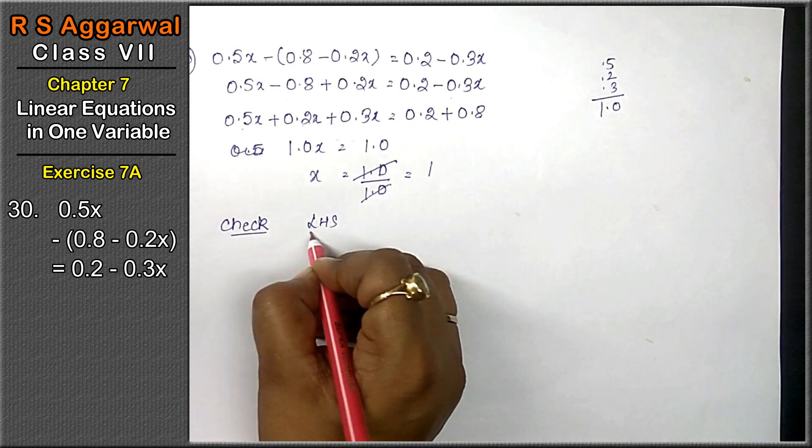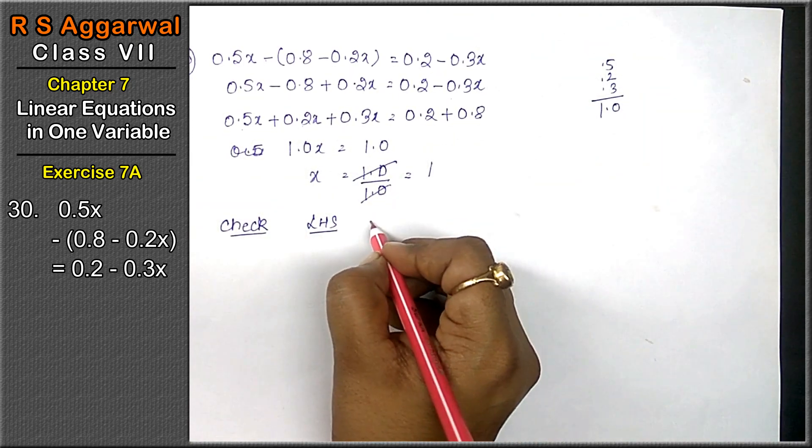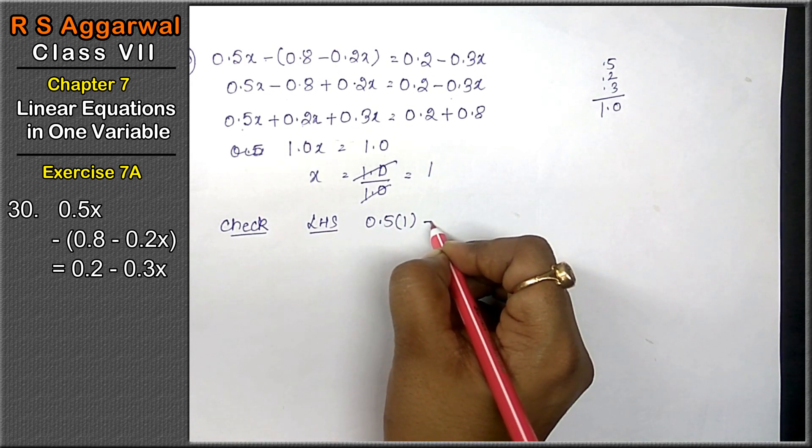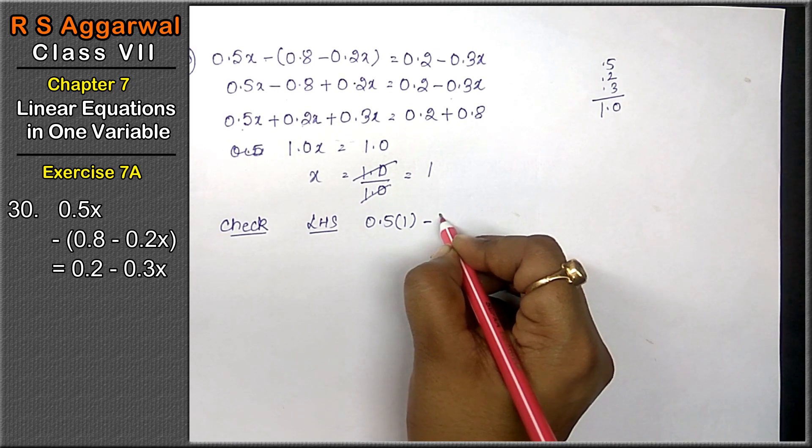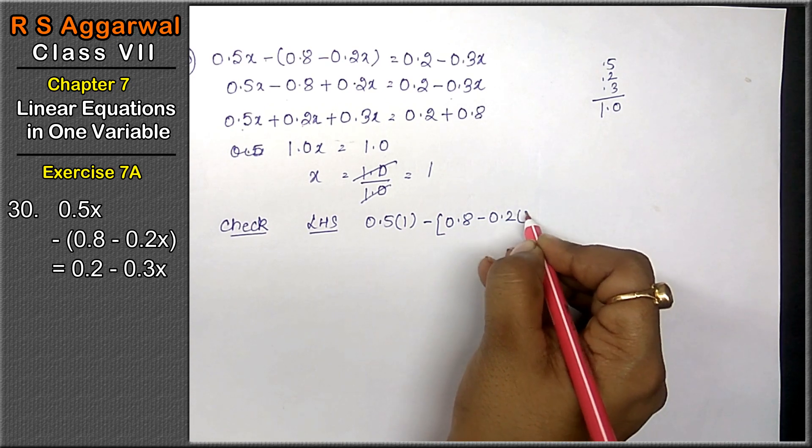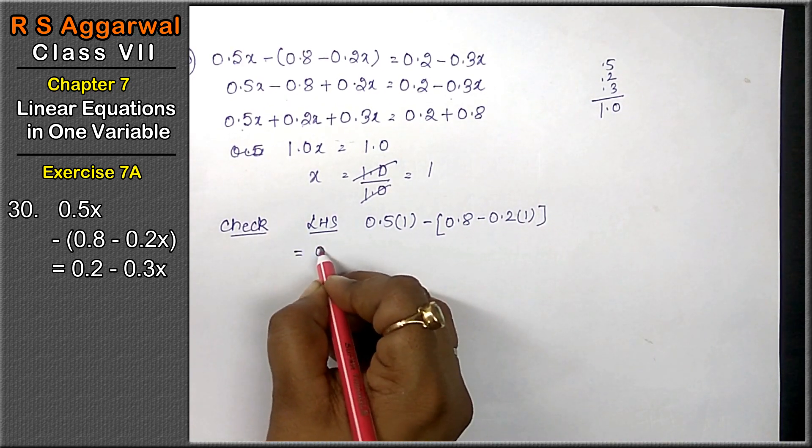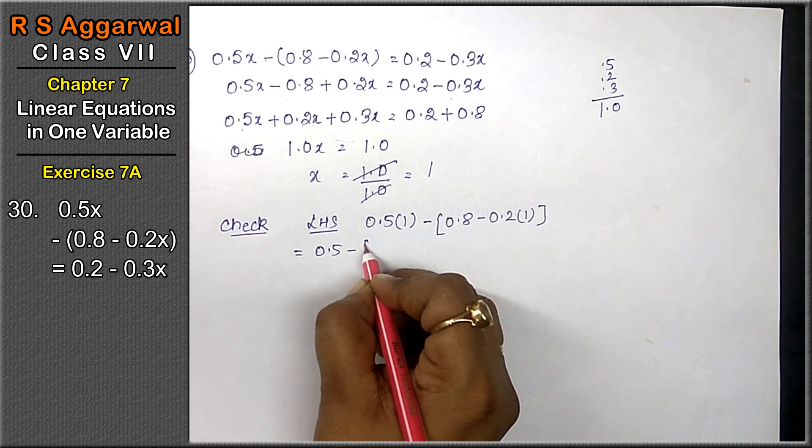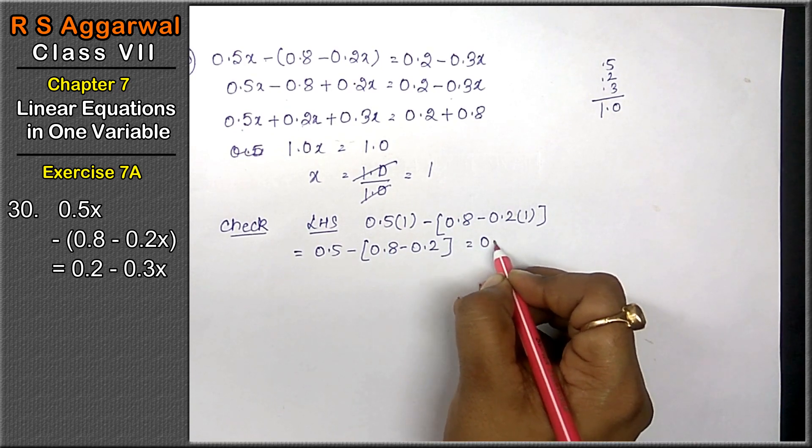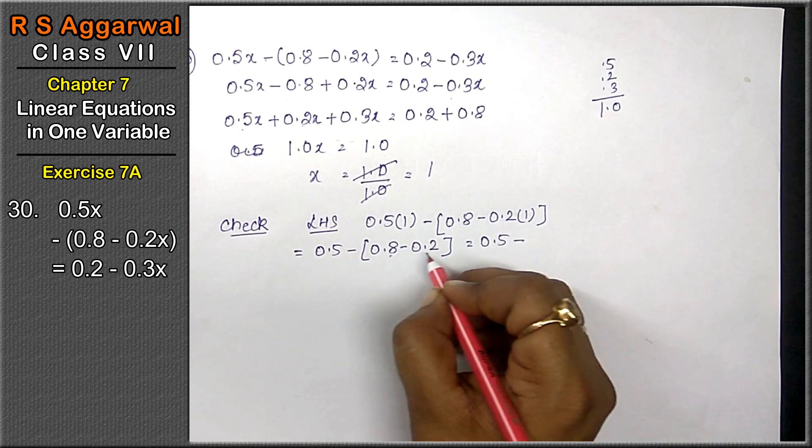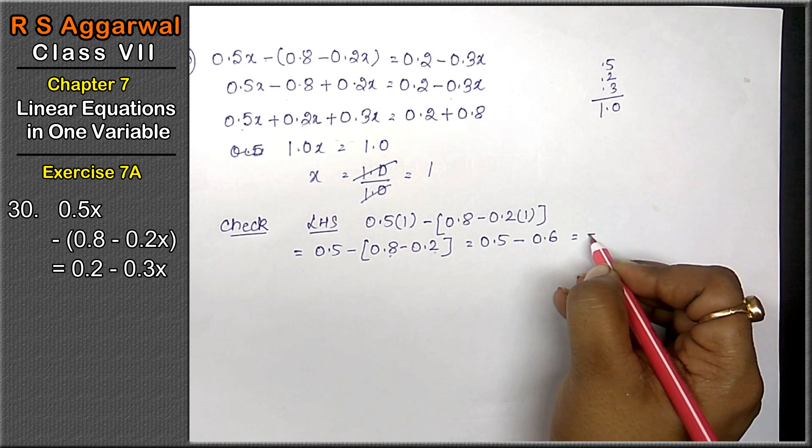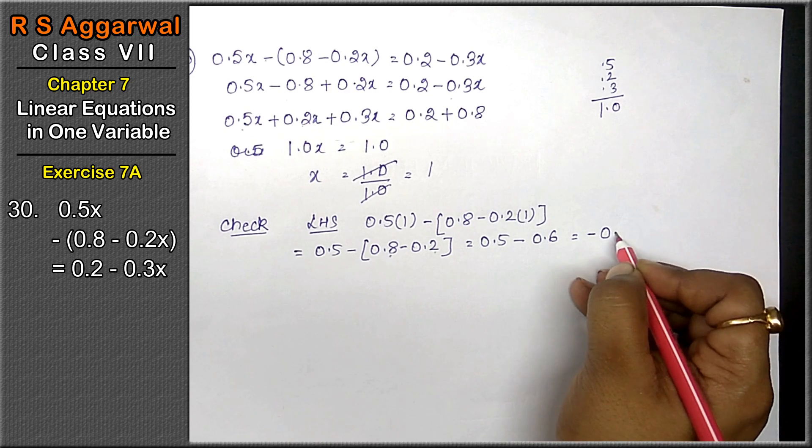Check the left hand side. Our left hand side is 0.5(1) - 0.8 - 0.2(1). That means 0.5 - 0.8 - 0.2. That means 0.5 minus 8 minus 2, which is 6. 0.6. That means minus 0.1.